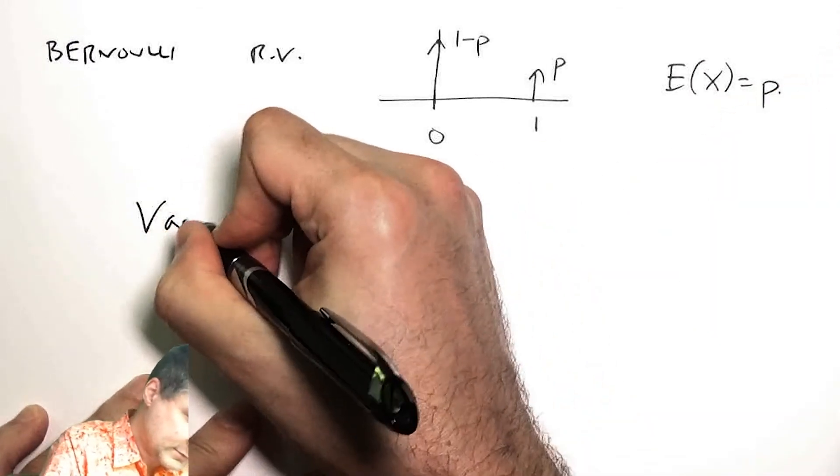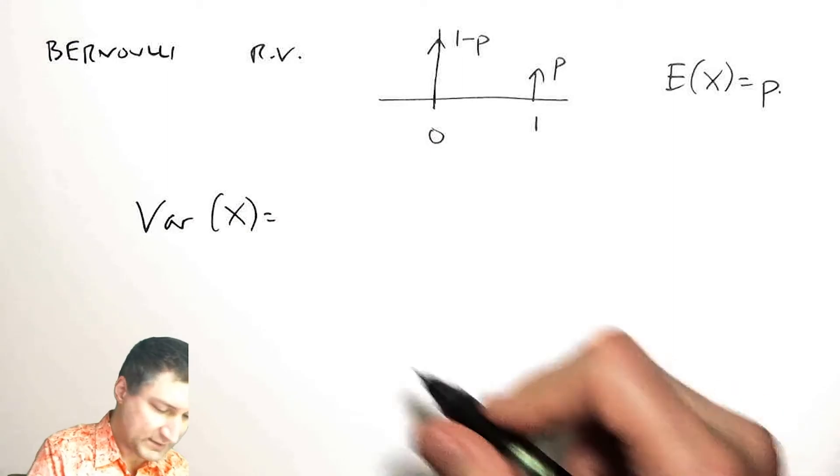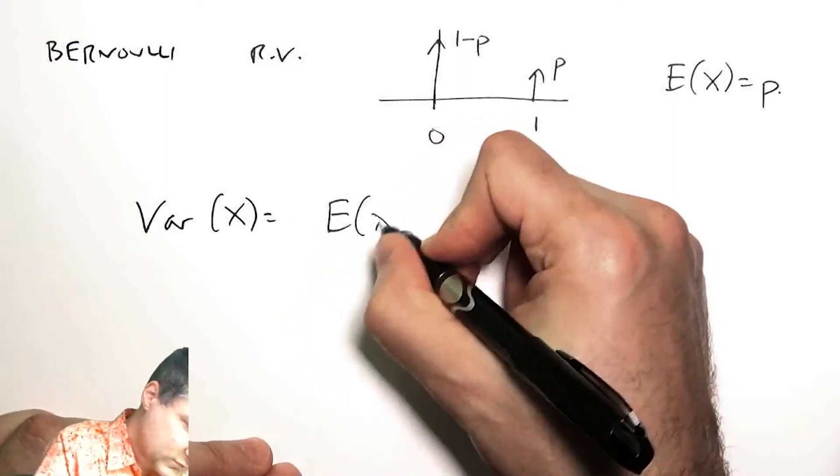and the expected value of this is p. What is the variance? I can do this in a couple ways.